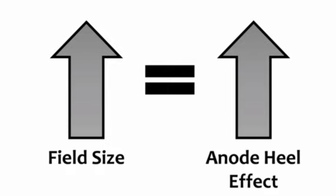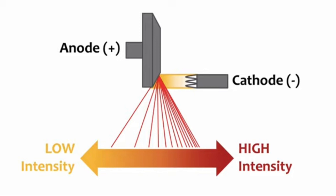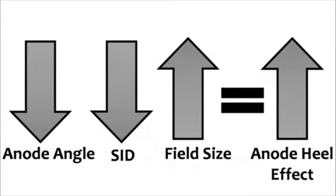If the field size is increased, the Anode Heel Effect is increased. If the field size is decreased, the Anode Heel Effect is decreased. The Anode Heel Effect depends on three things: the intensity towards the cathode is increased; the main reason is the anode angle; the second is the SID — if the distance is decreased, the Anode Heel Effect is increased; and if the field size is increased, the Anode Heel Effect is increased.